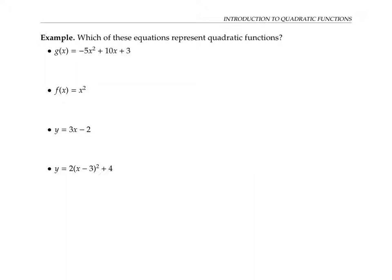The first function can definitely be written in the form g of x equals a x squared plus b x plus c. In fact, it's already written in that form, where a is negative five, b is 10, and c is three.